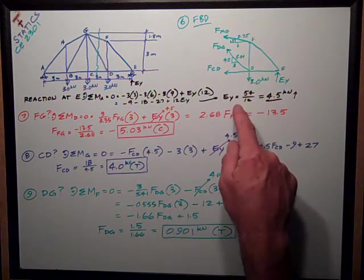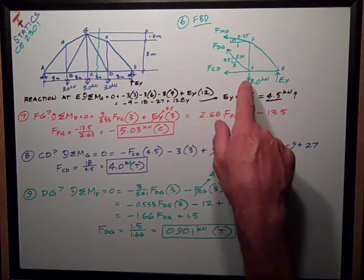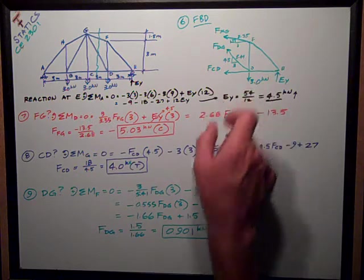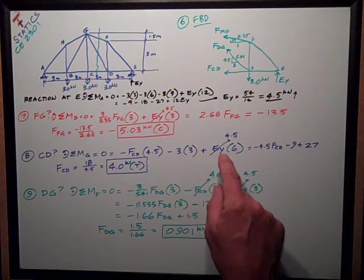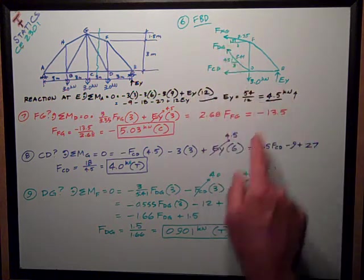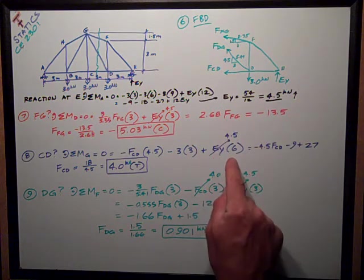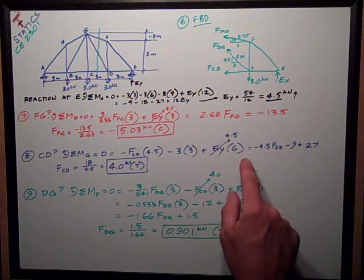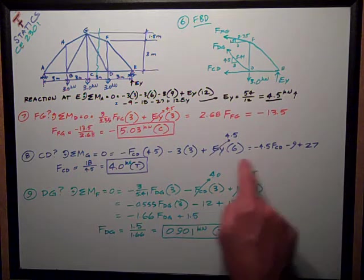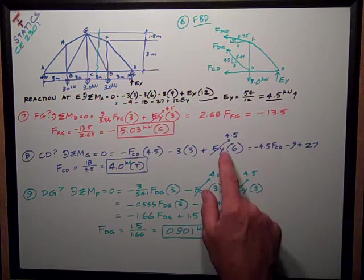So it's negative FCD times 4.5, minus 3, also trying to rotate clockwise about point G, the applied force of 3 kilonewtons, times its moment arm of 3, plus, because it's trying to rotate counterclockwise about G, is the force of EY, which is 4.5, times its moment arm of 6. Doing all the math, sum of the math, I get negative 4.5 CD, minus 9, plus 27.